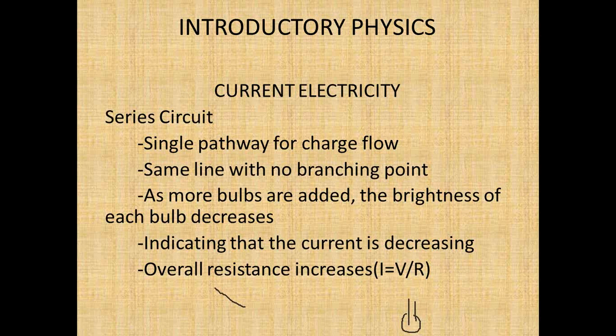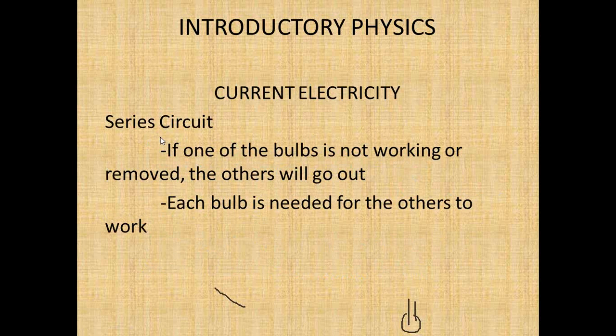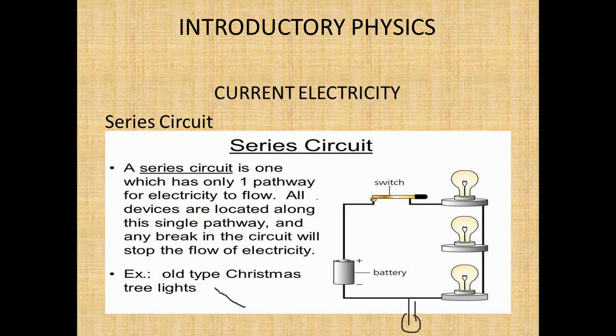With a series circuit, if one bulb is not working or you remove one bulb, the others will go out because the circuit is not complete. Each bulb is needed for the others to work — you need all bulbs to complete the circuit. This was the problem with old Christmas lights: if one bulb was blown or removed, there was no light in the system because the bulbs were wired in series.